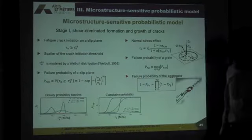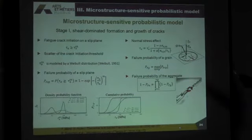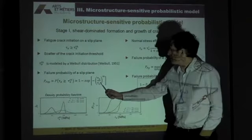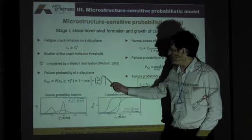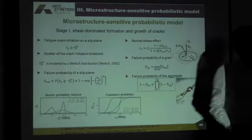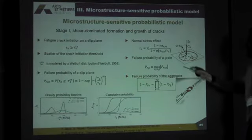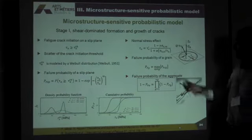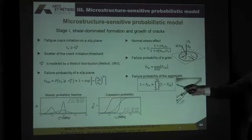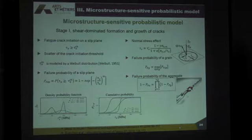My probabilistic model is the one based on stage one. I assume that the crack initiates when the shear stress reaches a critical value — a threshold. And I give to this threshold a distribution, for instance a Weibull distribution with a scale factor and a shape factor. When M is large, there is almost no scatter. When M is small, we have a large scatter. After reducing the effect of normal stress, I estimate the failure probability in a grain, and then according to the weakest-link concept, I can derive the survival probability of the whole aggregate.